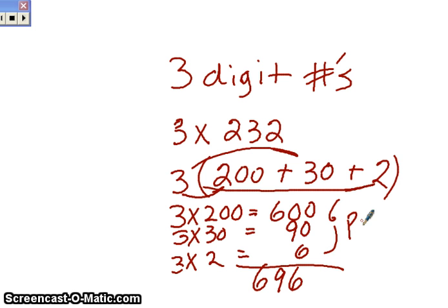And again, this time we have three partial products because it's a three-digit number. So those partial products are added up and we get the 696.